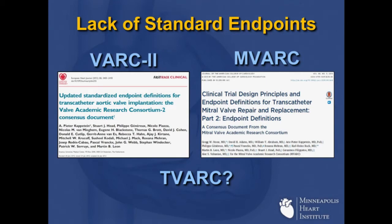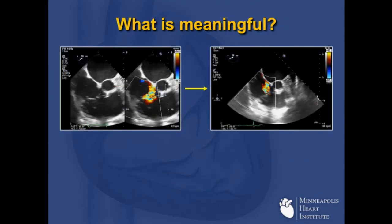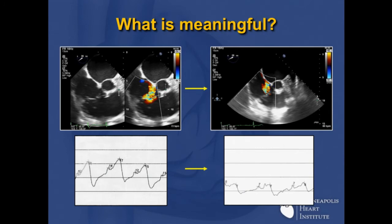There's also a lack of standardized endpoints. We have VARC, we have MVARC — we don't have TVARC yet, hopefully soon. Here's an example: we clipped this patient, started with significant TR and ended with some reduction but still a meaningful amount of TR. However, look at the RA pressure difference — the mean dropped to seven, and this patient became asymptomatic at follow-up. She called six months later, incredibly grateful, diuresing beautifully. RA pressure is going to be absolutely essential in determining outcomes.